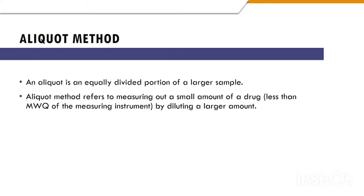In this method, we measure a small amount of a drug by diluting a larger amount, because the small amount of a drug is less than the minimum weighable quantity of the measuring instrument. The minimum weighable quantity is the amount under which the instrument cannot weigh the substance.